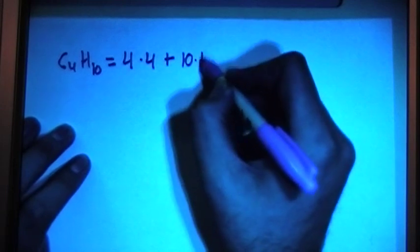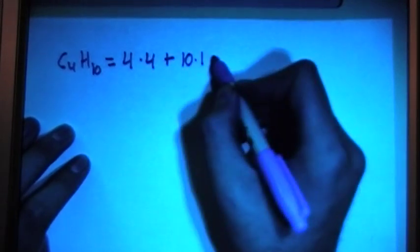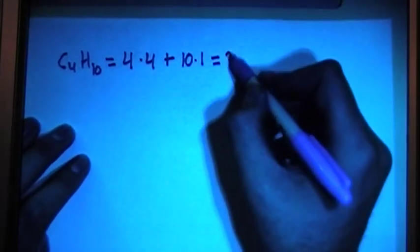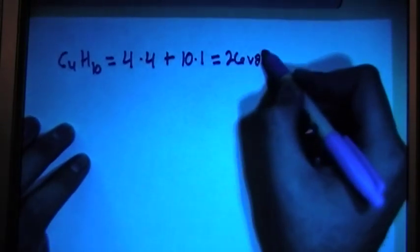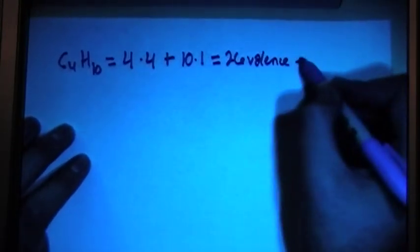Plus ten hydrogens with one valence electron per hydrogen, which is going to be a total of 26 valence electrons.